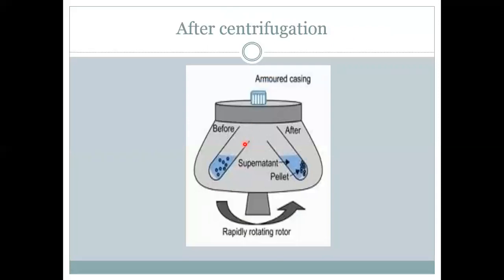Before centrifugation you have a mixture, and after centrifugation it is separated into two components. The one collected at the bottom of the tube is called the pellet, and the one collected at the top is called the supernatant. The supernatant is then removed and centrifuged again to further separate its components, repeatedly collecting pellets at each stage.